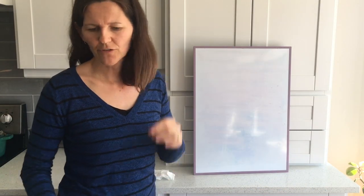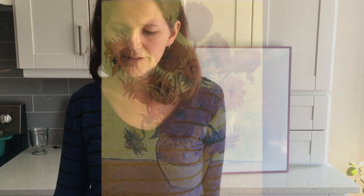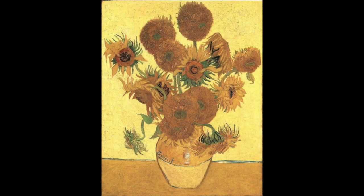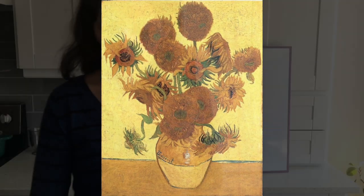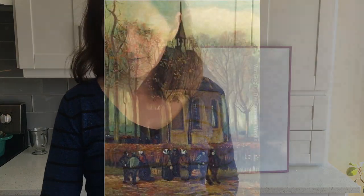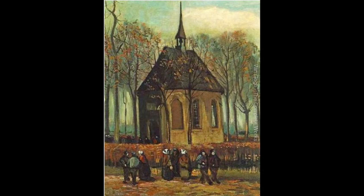We also have two images that demonstrate formal balance. We have Van Gogh's Sunflowers - if you were to imagine drawing a line right down the center, you're going to see that each half is generally the same, so we would call this an example of formal balance. Then there's Van Gogh's Worshippers Leaving the Church - drawing a line down the center, and pretty much the same thing is happening on each side. That's an example of formal balance.